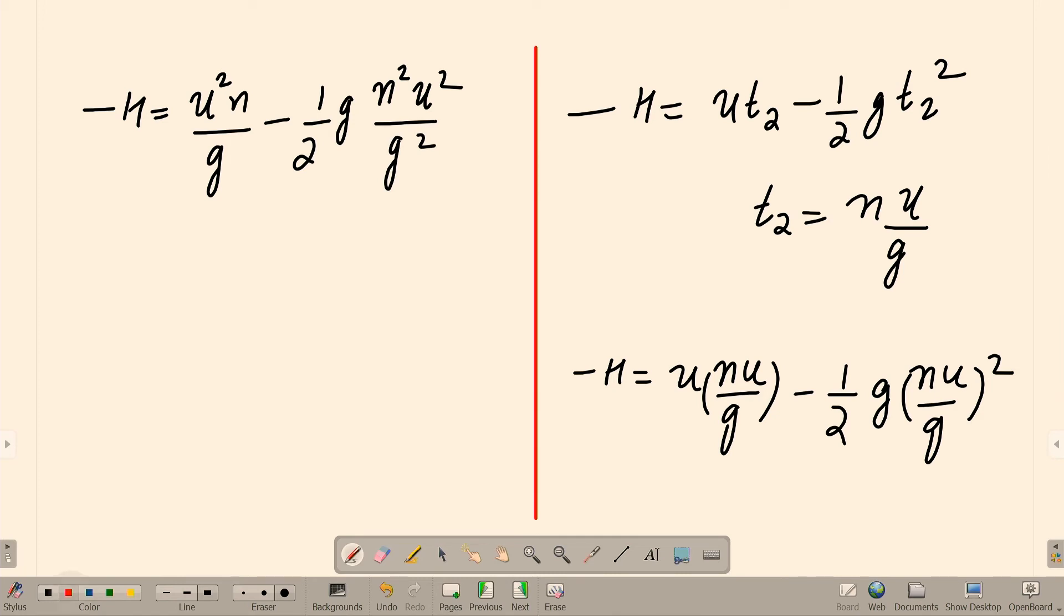Again, here 1 G will be cancelled out. We can do one thing. We can multiply 1/2 here and divide 1/2 here. So 2 G I can take common. So, minus H is equal to 1 by 2 G, 2 U square N, minus N square U square.